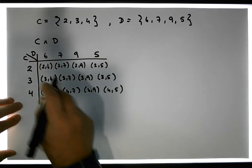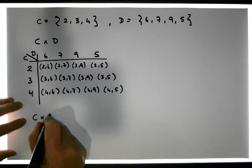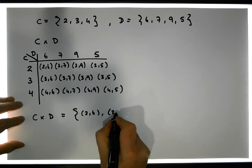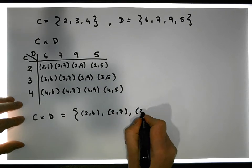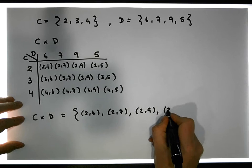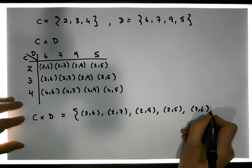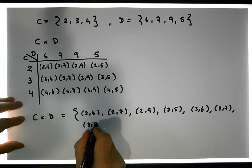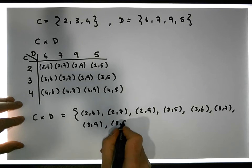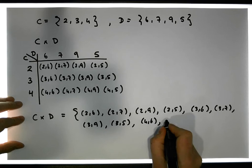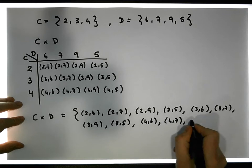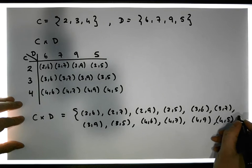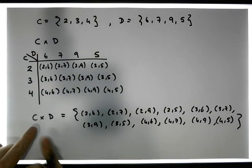So the cross product, C cross D, is the set that contains all these values, so it contains 2,6, 2,7, 2,9, it contains 2,5, it contains 3,6, it contains 3,7, it contains 3,9, it contains 3,5, it contains 4,6, it contains 4,7, and it contains 4,9, and finally it contains 4,5, and that's the set which is the cross product of C with D.